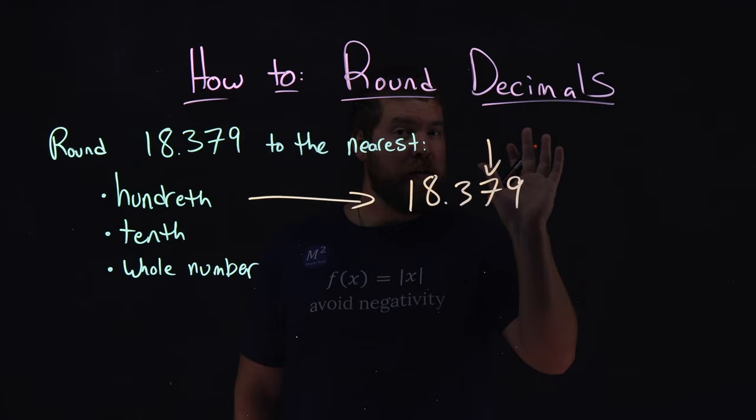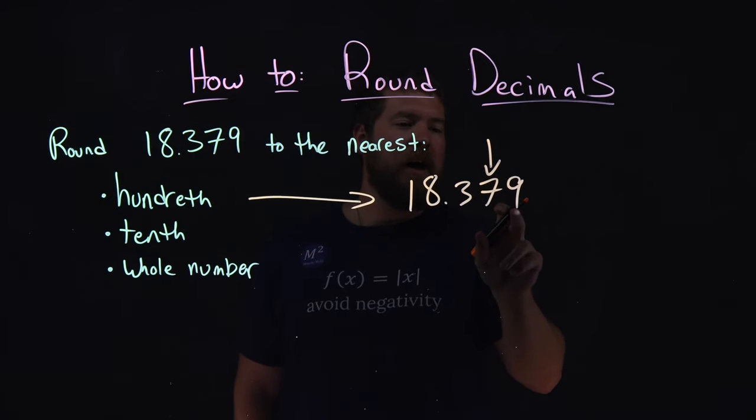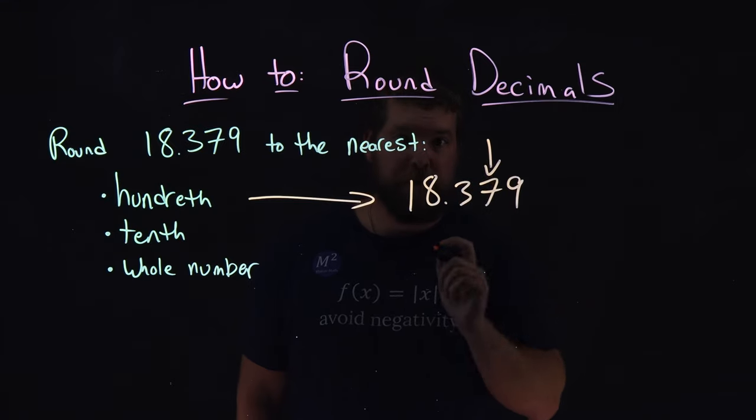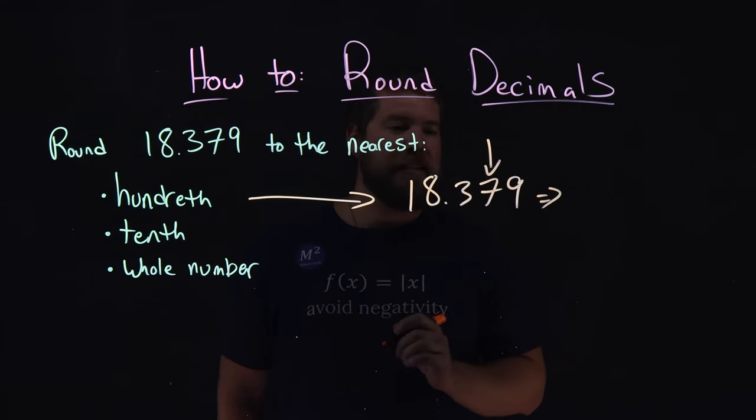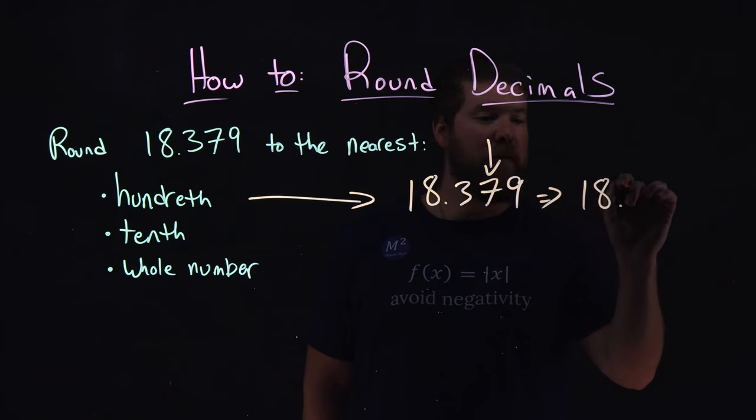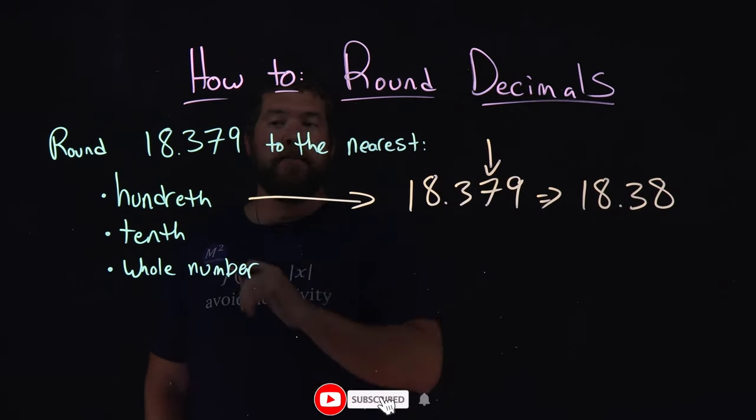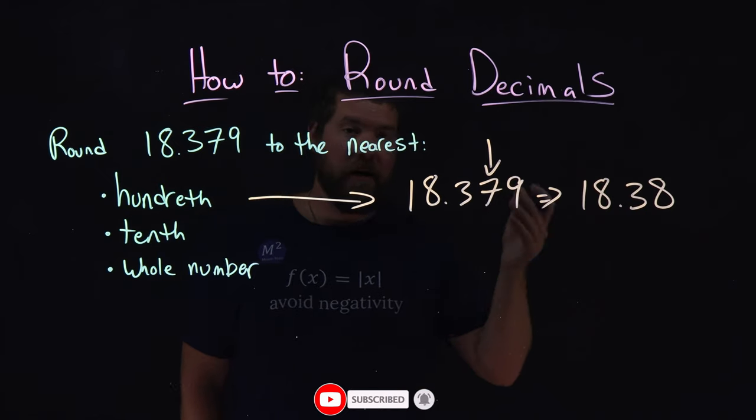So, since it's larger than, or 5 and larger, that 9 causes this 7 to round up by 1. So, this 18.379 would change to be 18.38. And that's how I rounded this number, 18.379, to the nearest hundredth.